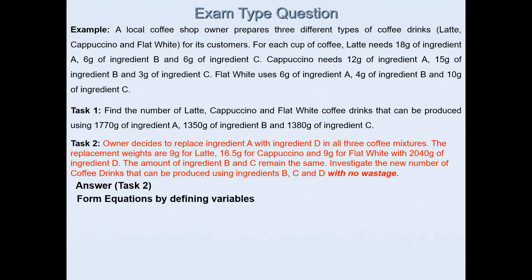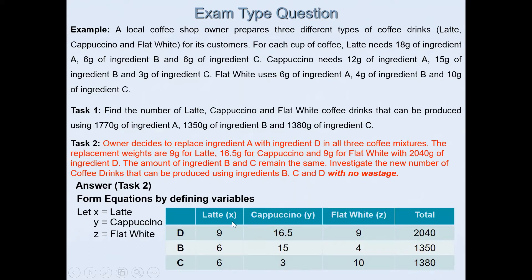What we will do is form equations by defining the variables. I can let x be latte, y be cappuccino drinks, and z be flat white. There's lots of information given in context, so it's easier for you to create a table and go from there. It's not compulsory, but that will help you form equations. I've already created a table for you, so it's easy to see. I've replaced ingredient A with ingredient D, as mentioned in this question.